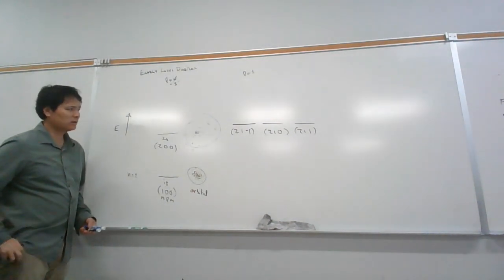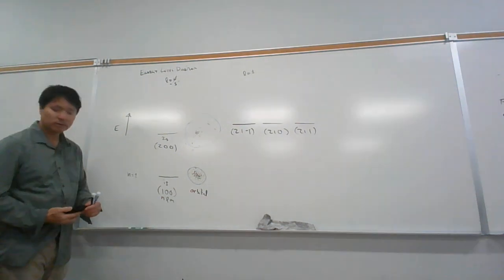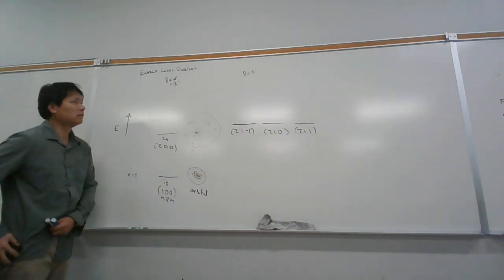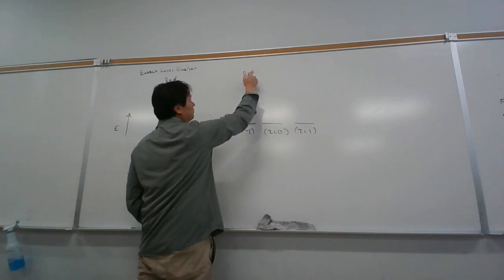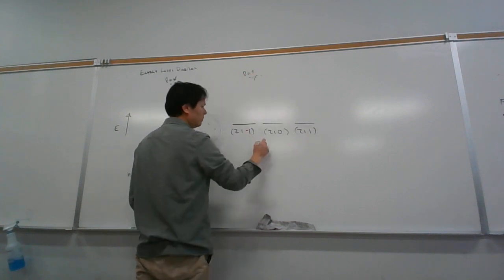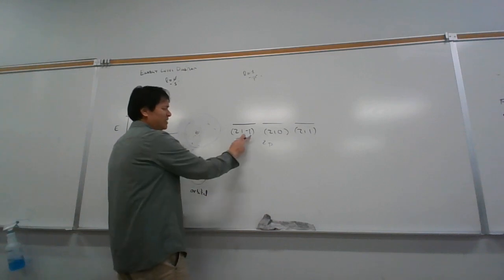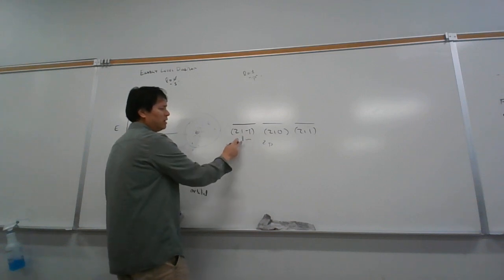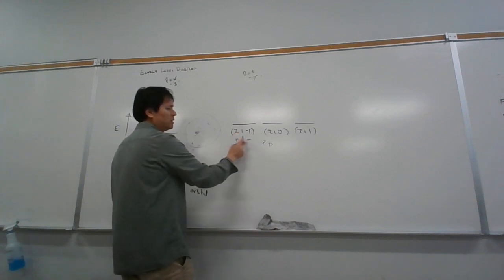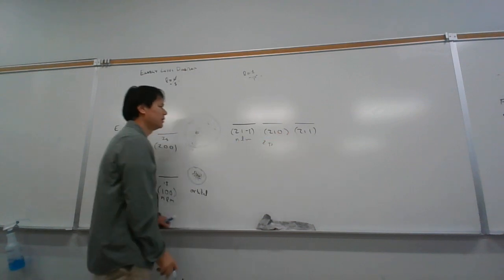These orbitals we call not s, but we call them p. These are the p orbitals. We have three 2p orbitals because m gives us three values - minus 1, 0, and plus 1 - one for each orientation. These would typically be on the x, y, and z axes.